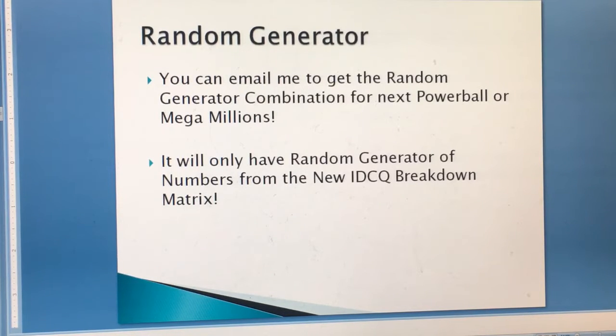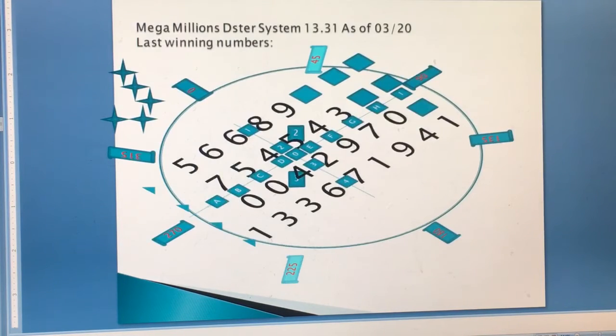Before we get started, these systems also have the random generator pick. Remember, Mega Millions using the Dater System 13.31. As you can see, the 13.31 system will be according to this illustration.